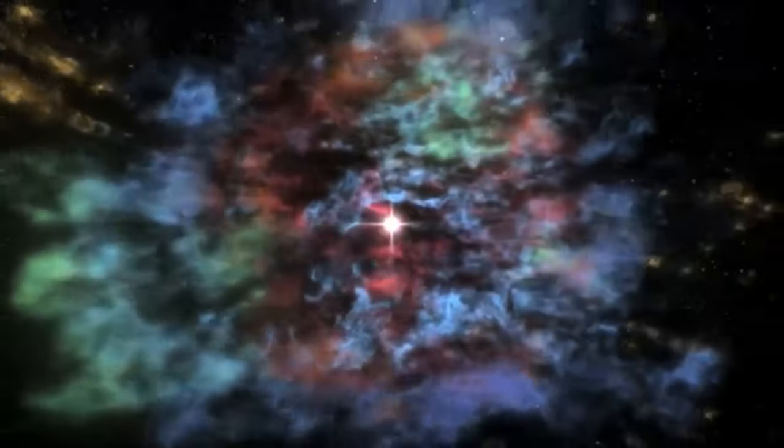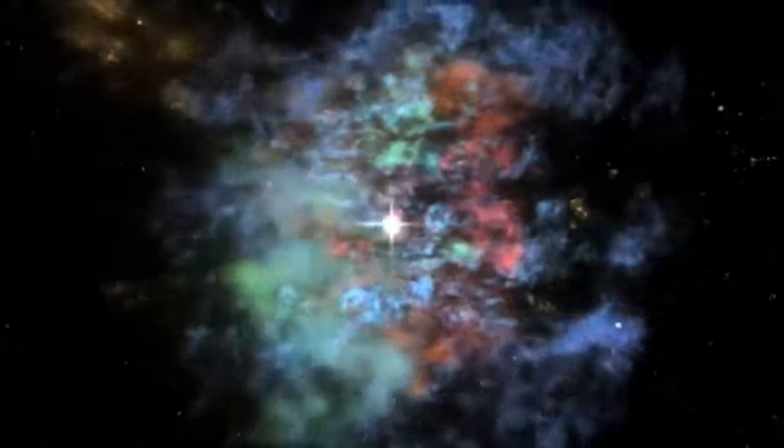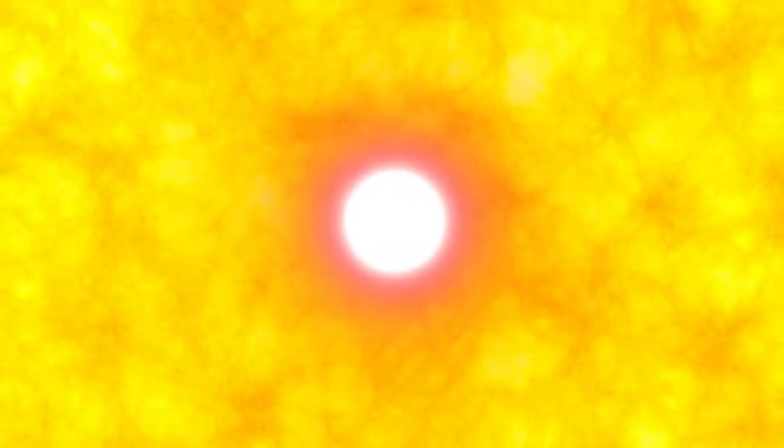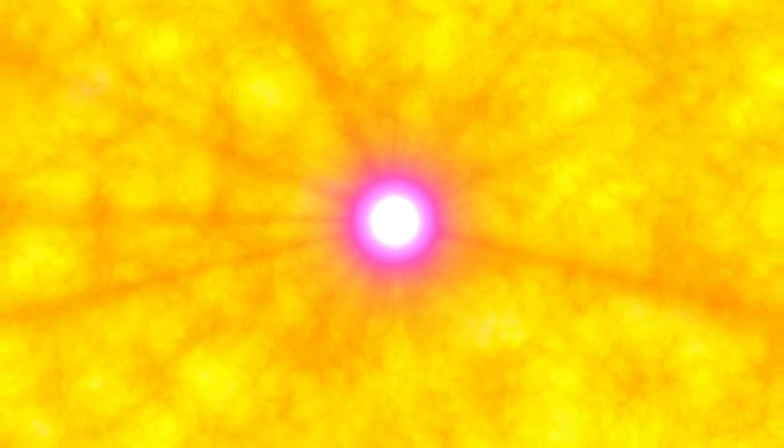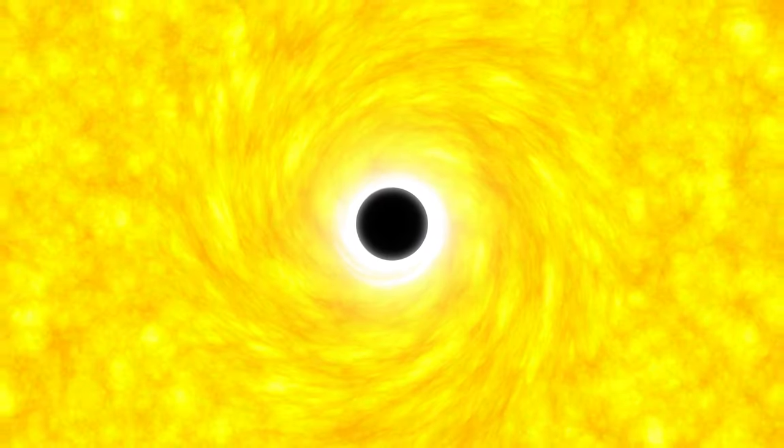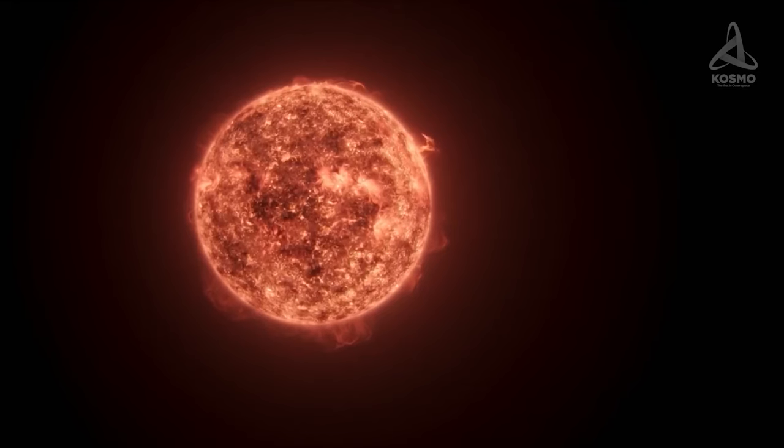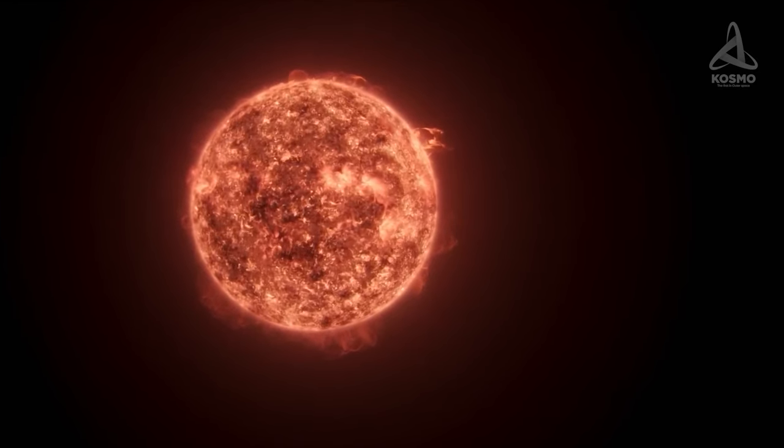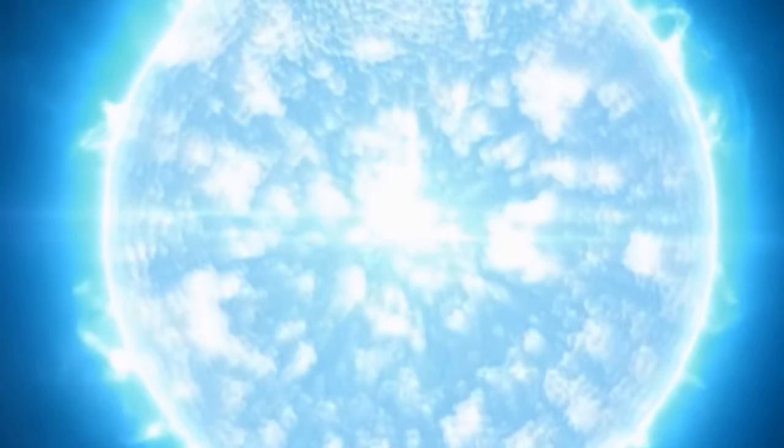But hold on, sometimes the tale takes a different twist. In the most massive stars, the temperature soars to heights where even neutron degeneracy can't counterbalance the gravitational collapse. The core collapses further under its immense weight, leading to the birth of a black hole. In other words, neutron stars form within a specific range of star masses. Stars too light won't ignite the neutronization process, while the most massive ones evolve into black holes.